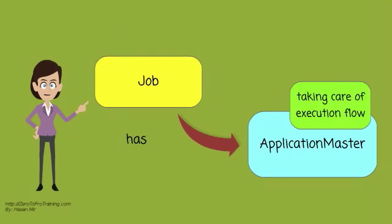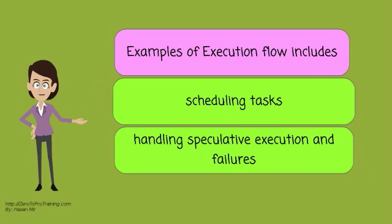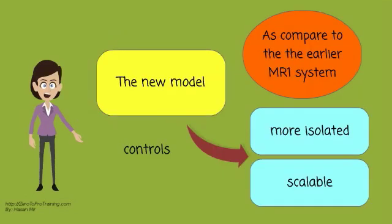Each job has an application master taking care of execution flow. Examples of execution flow includes scheduling tasks, handling speculative execution, and failures, etc. The new model is more isolated and scalable than the earlier MR1 system.